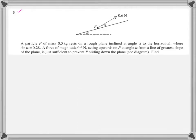Let's read the question. It says, a particle P of mass 0.5 kg rests on a rough plane inclined at angle alpha to the horizontal, where sin alpha equals 0.28. A force of magnitude 0.6 N, acting upwards on the plane at angle alpha from a line of greatest slope of the plane, is just sufficient to prevent P sliding down the plane. Now, once you have read this much of the question, what is the background knowledge that you need? You need resolution of forces. You need the concept of equilibrium.